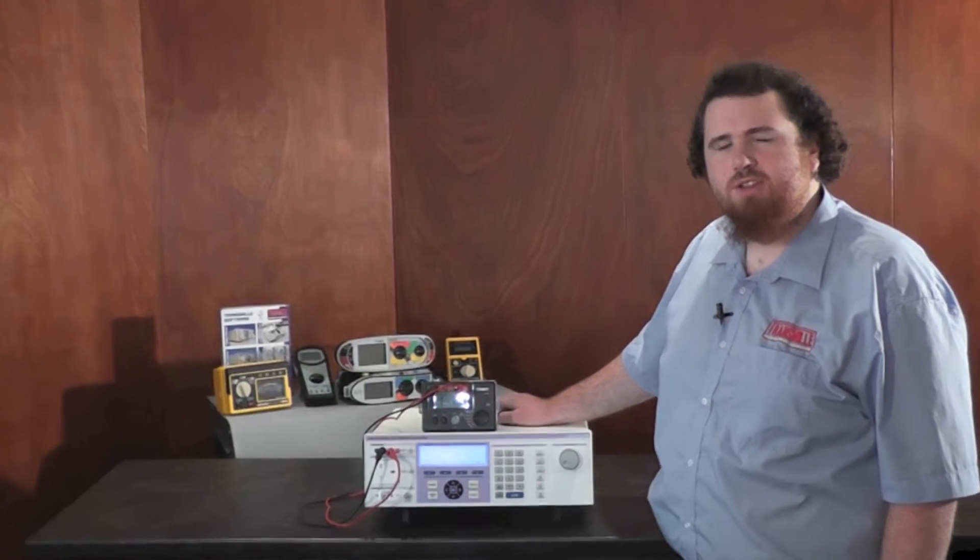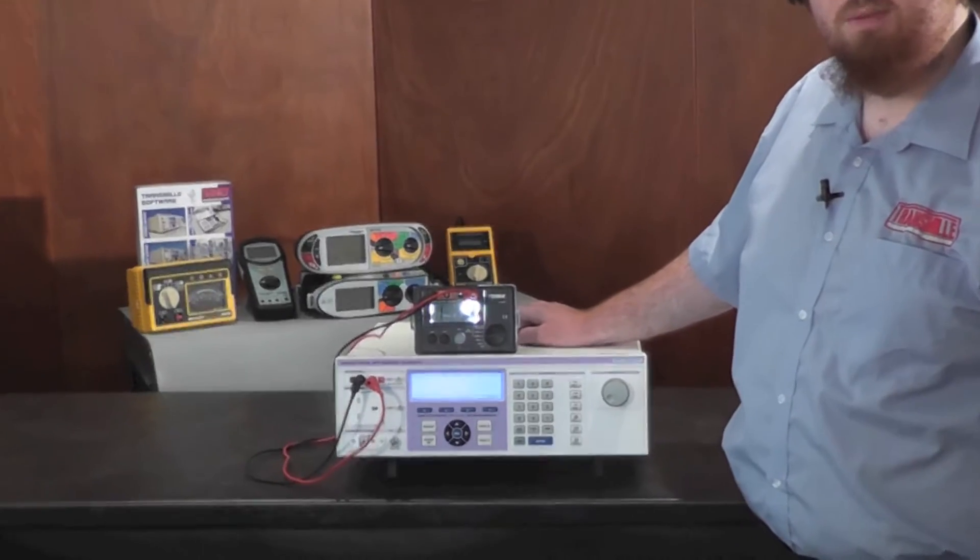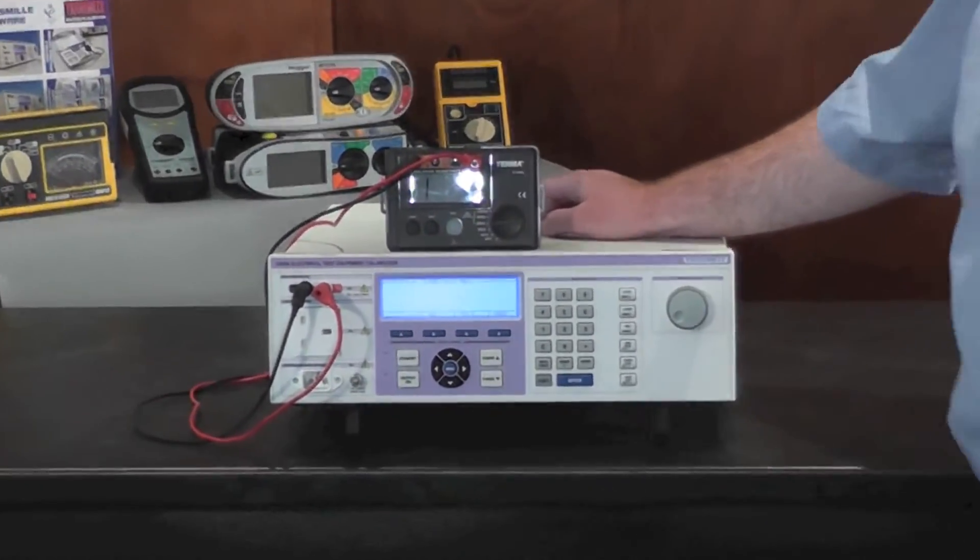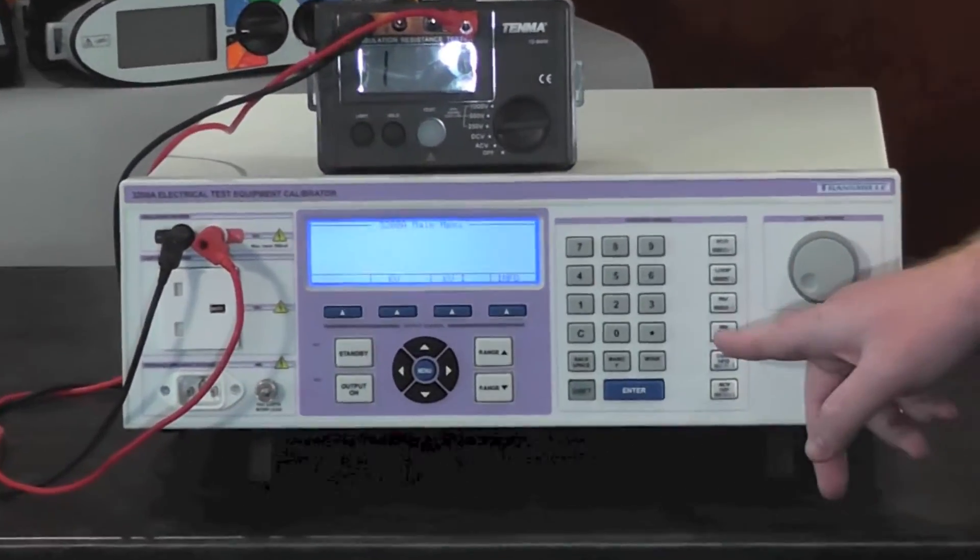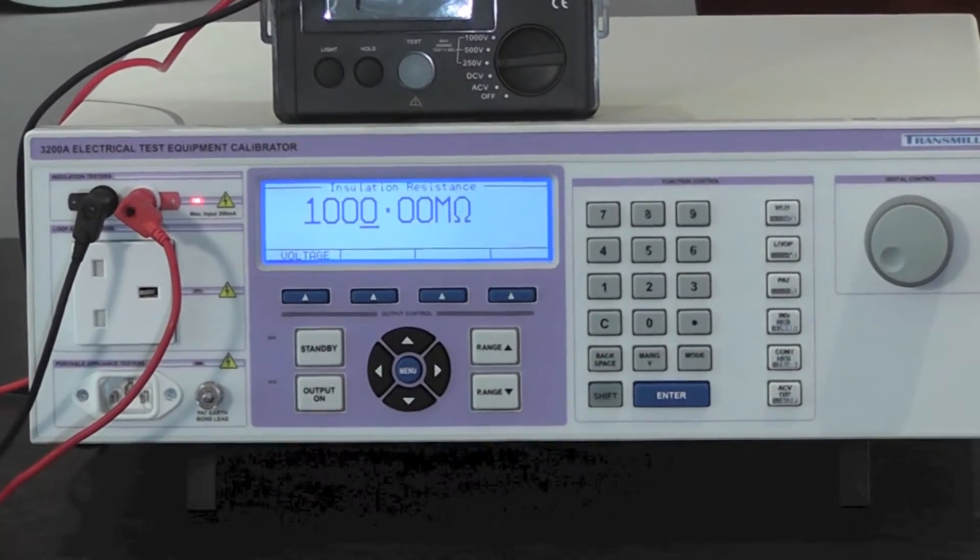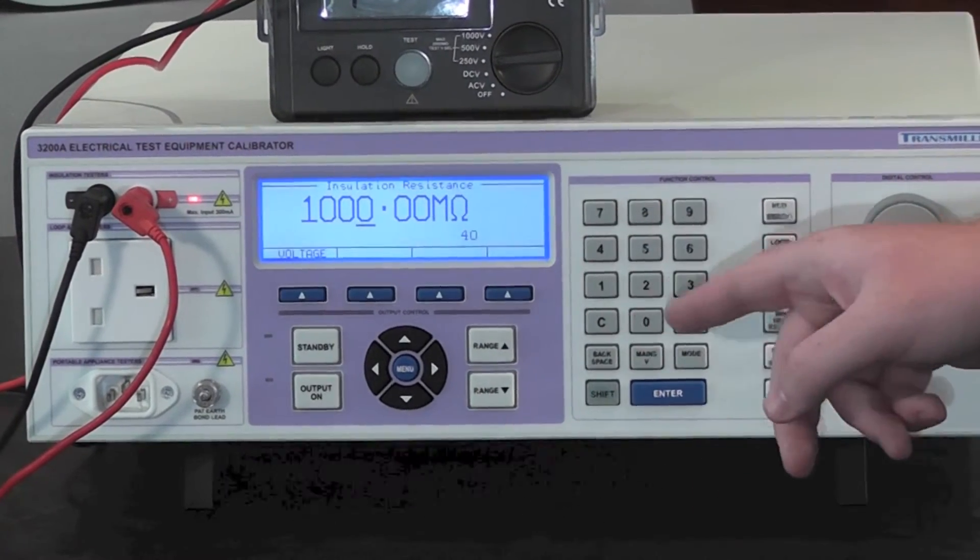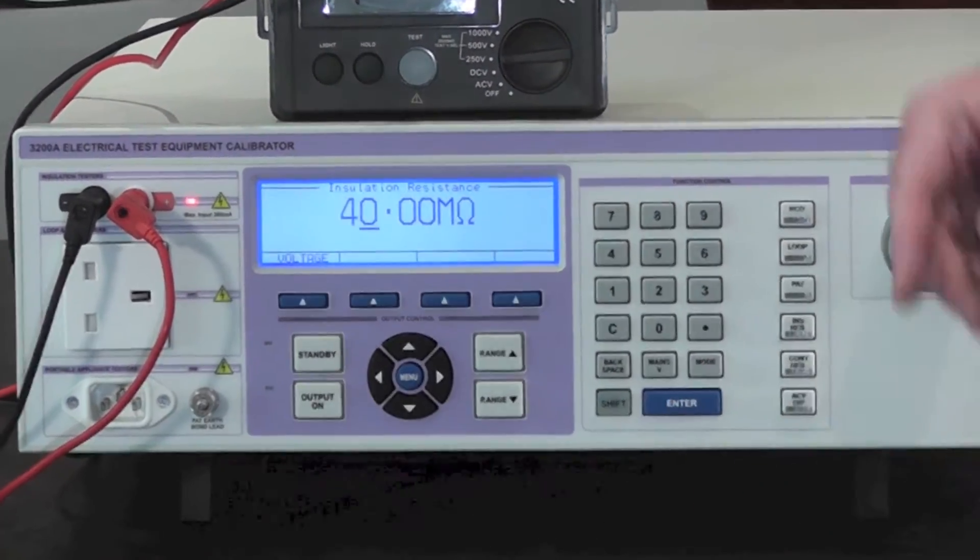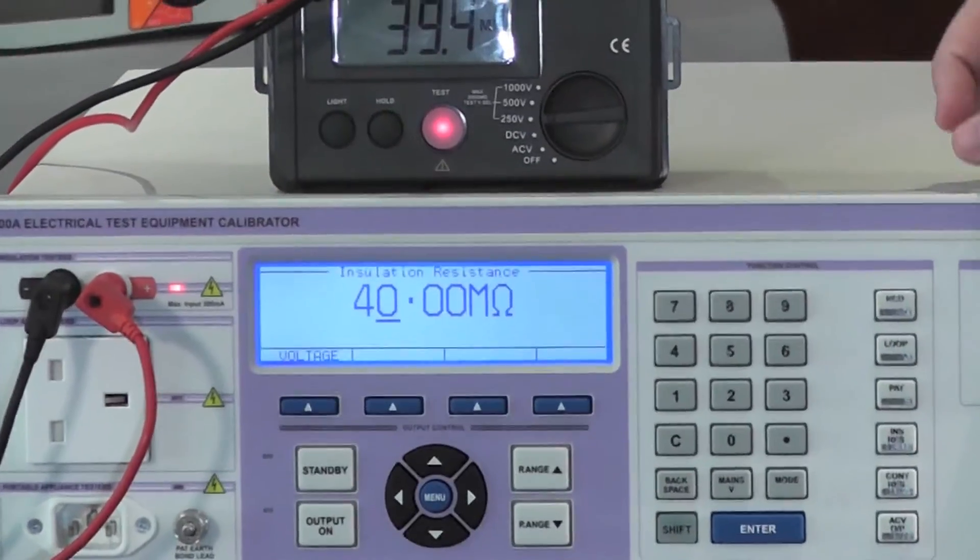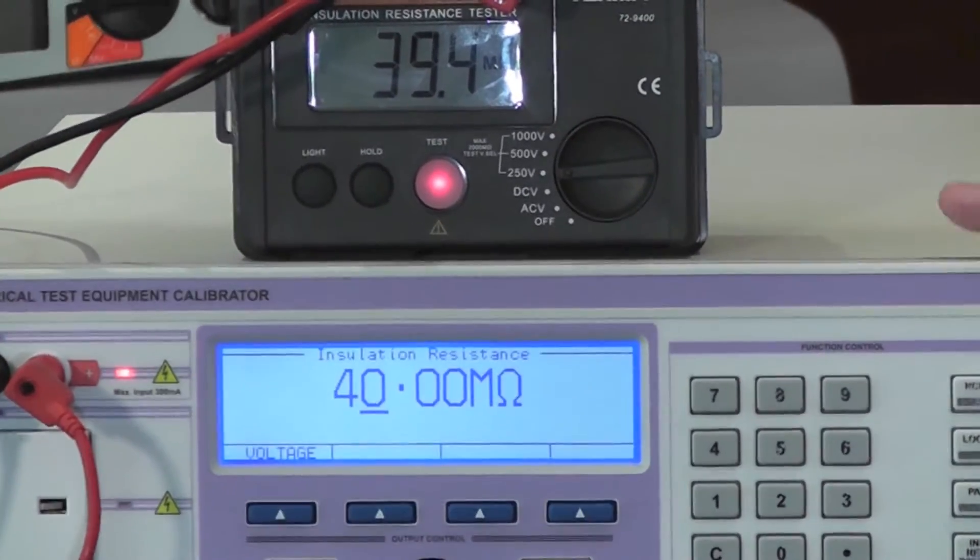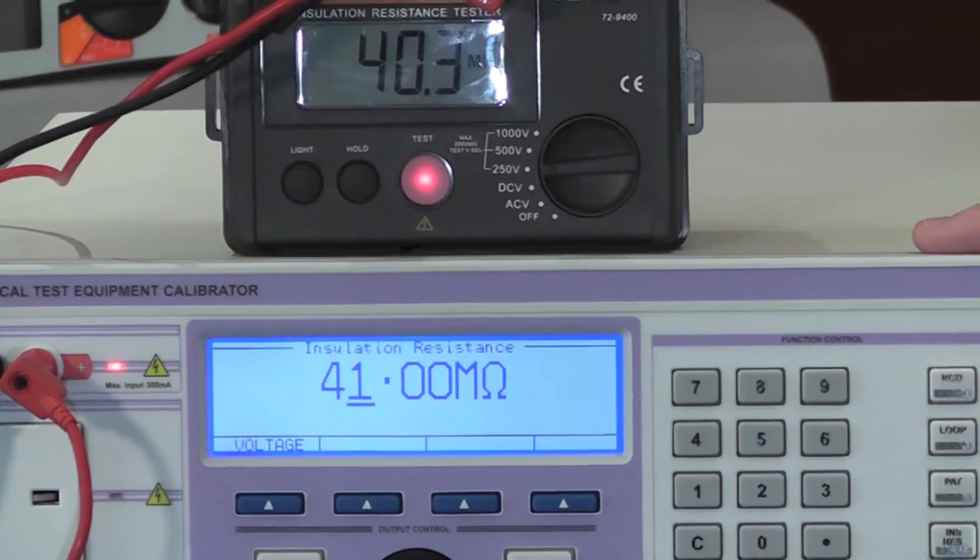Calibrating insulation testers with the 3200A couldn't be simpler. Simply select the insulation resistance function, enter the resistance required, for example 40 megaohms, and press the test bus button on the tester. The output resistance can be varied using the digital control.